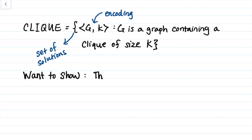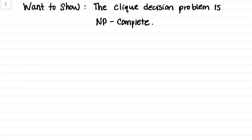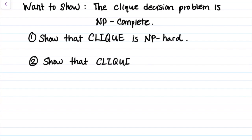We want to show that the clique decision problem is NP-complete. To do this, we need to show two things. First, we need to show that the clique is NP-hard, and then we need to show that the clique is in NP.